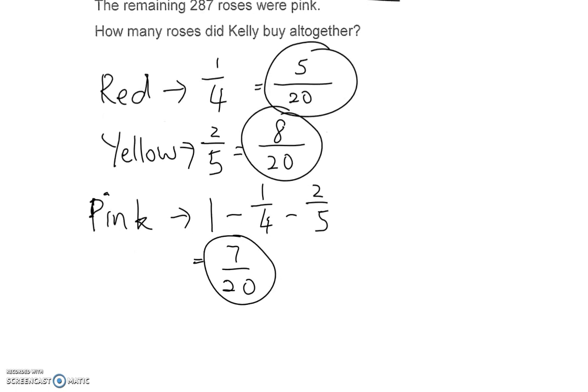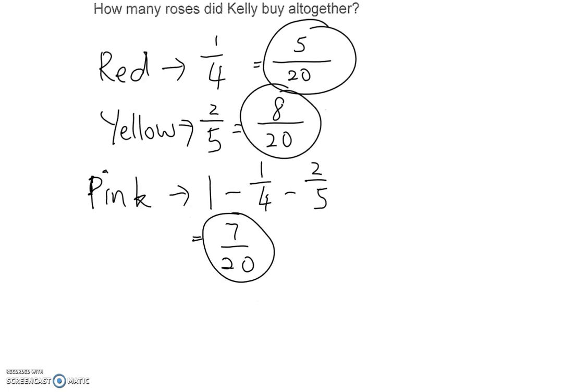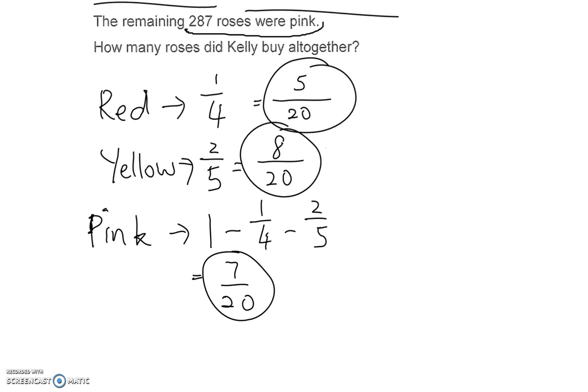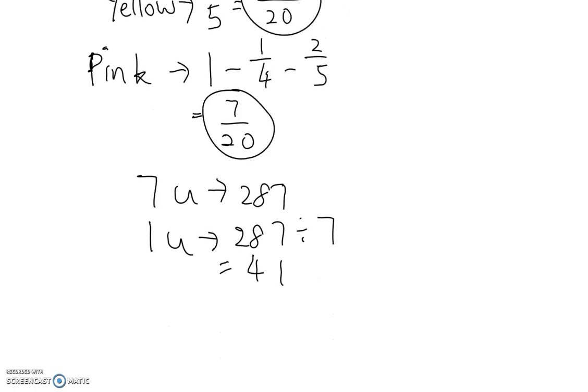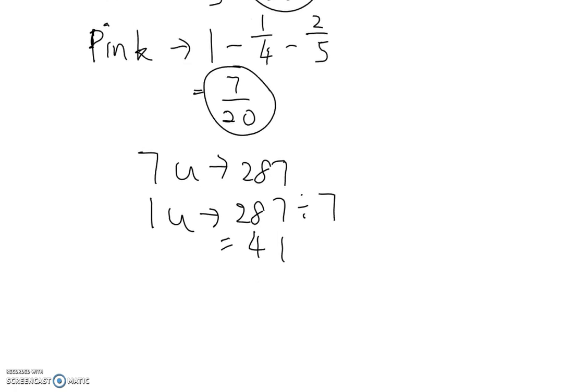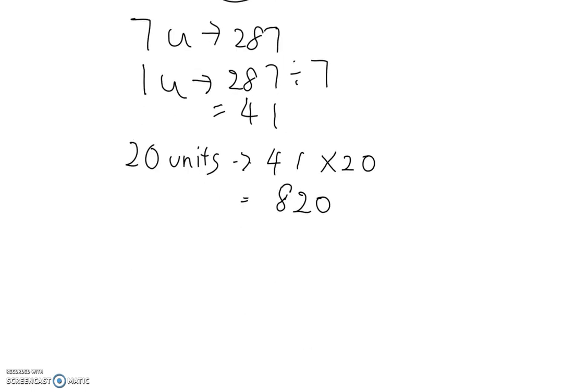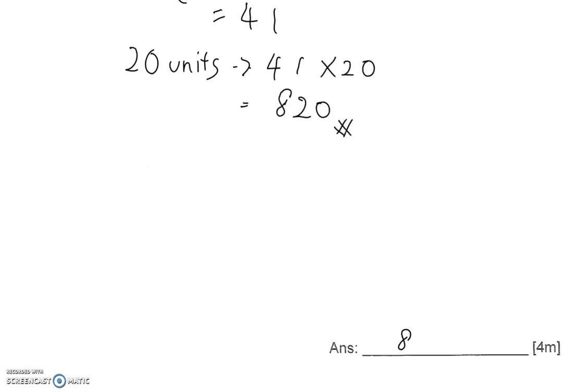So they said pink has 287 roses. Pink will be 7 units. And this 7 unit is equal to 287. 1 unit will be 287 divided by 7 gives you 41. Okay, very nice number. If you divide and you got the remainder, very likely you are in the wrong track. And total units, which is what we want to find. How many roses? All together, 41 times 20 gives you 820 as the answer. So your final answer, 820.